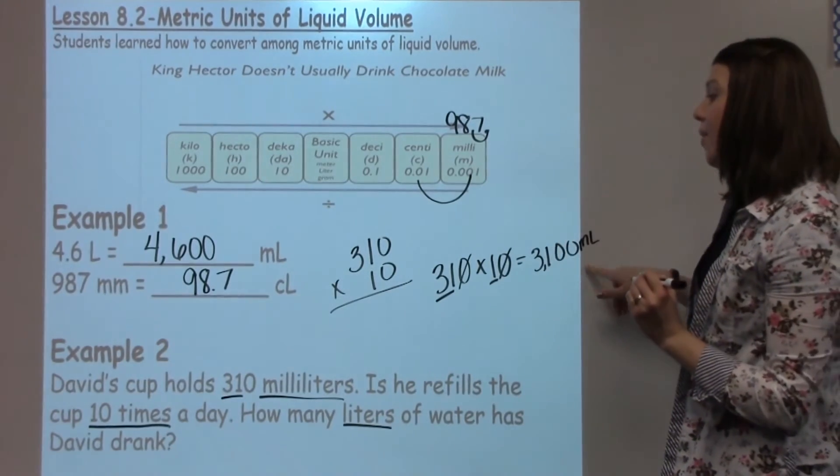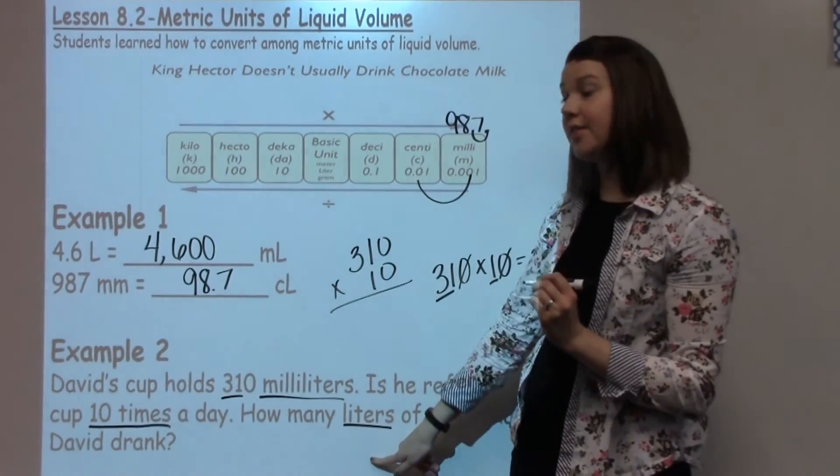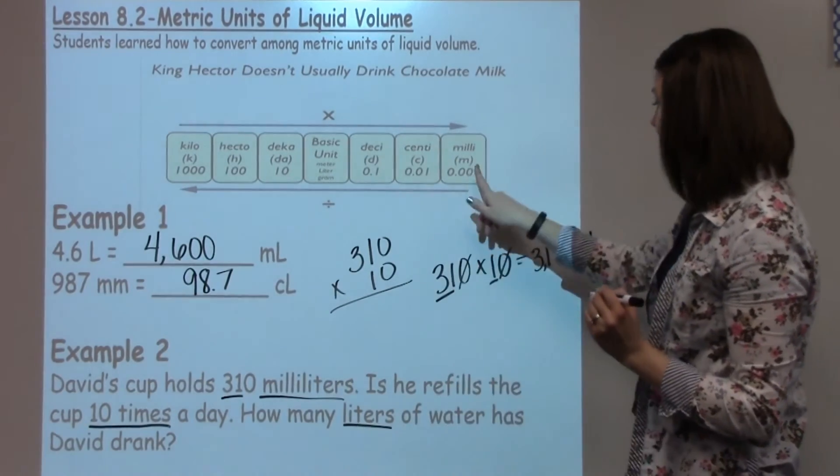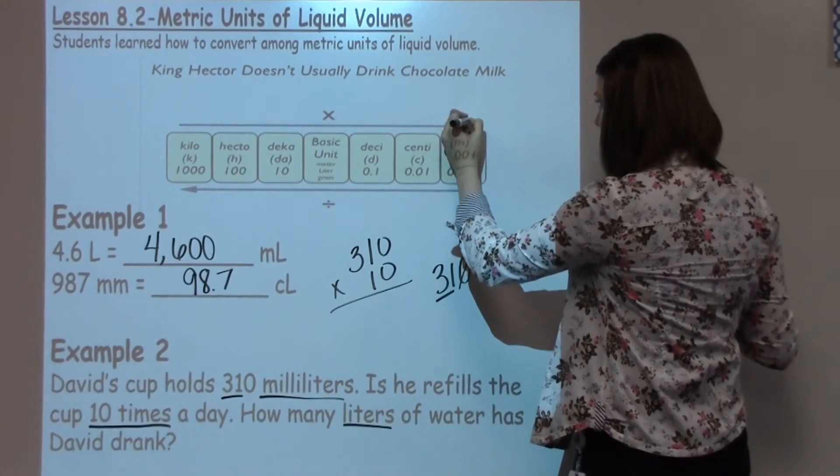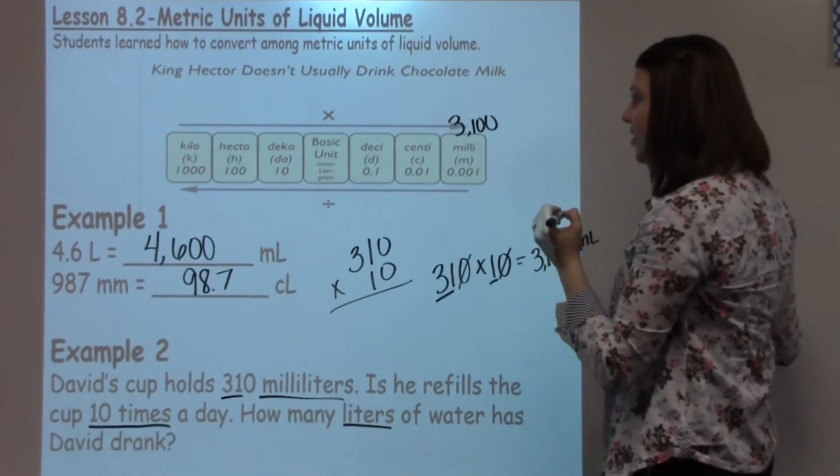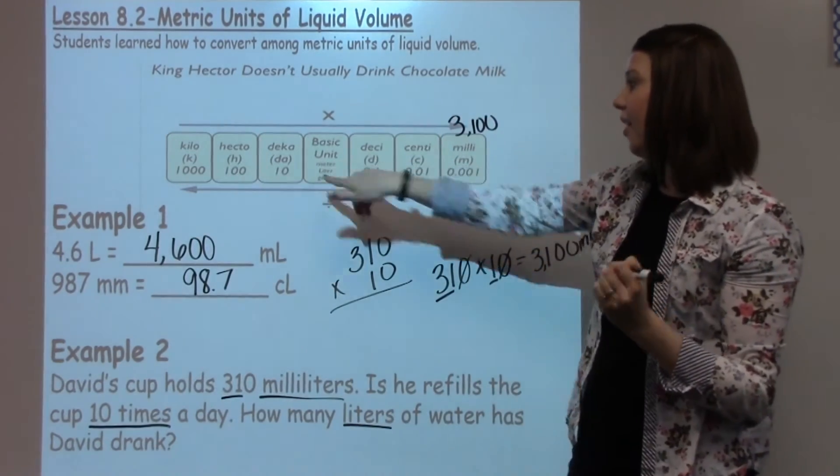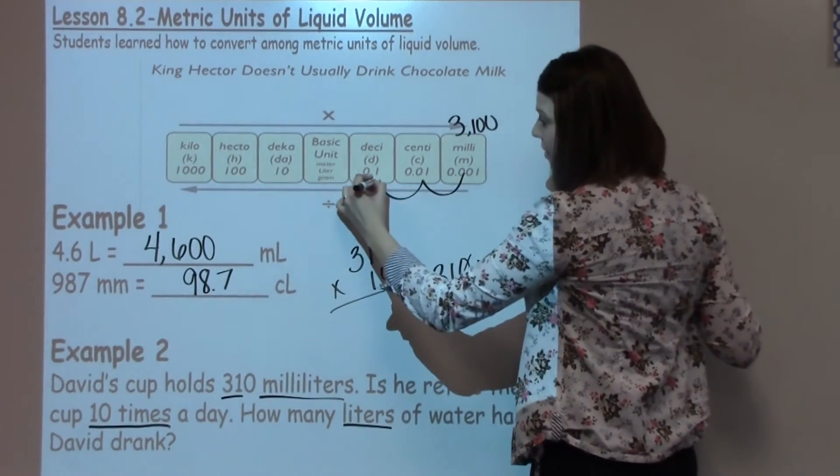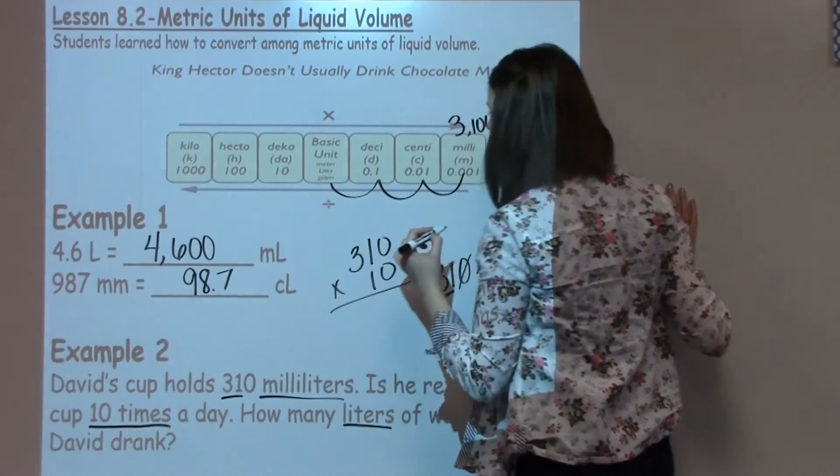Now we want to convert this to liters. So I'm going to go ahead and erase what I have up here from my previous problem. I'm going to go ahead and write milliliters here, my 3,100, and I need to go to my liters, which is right here. I'm going to go ahead and look, my answer is dividing.